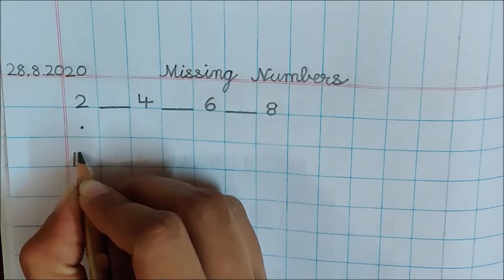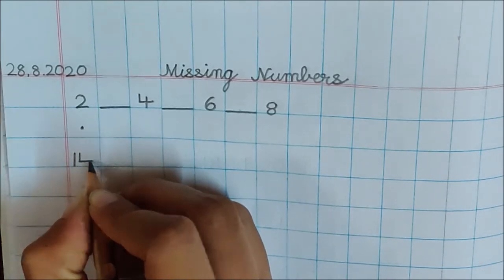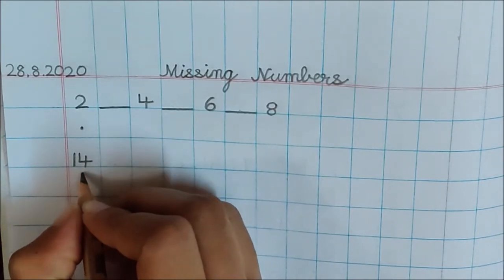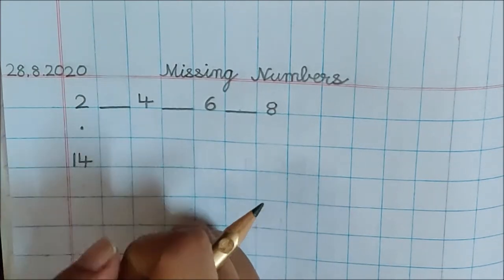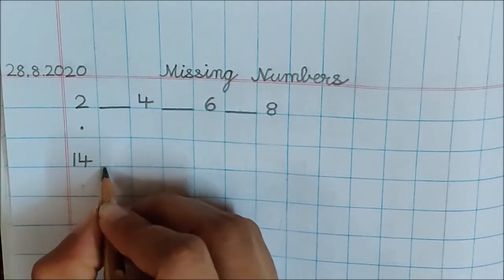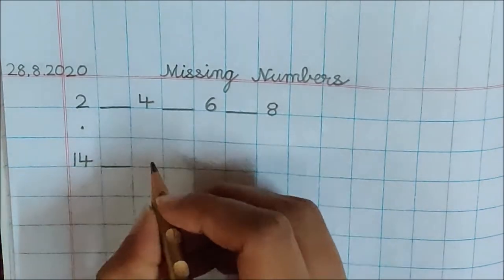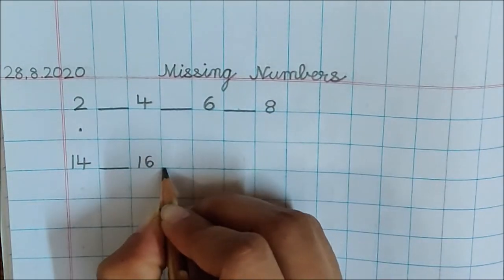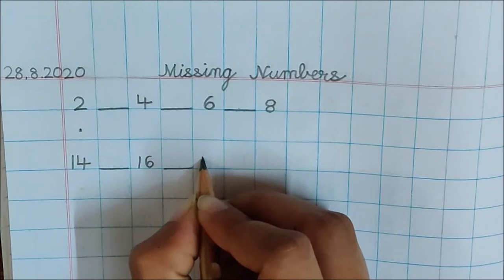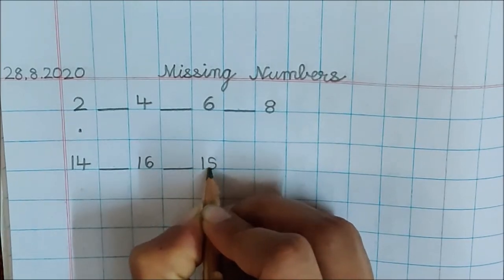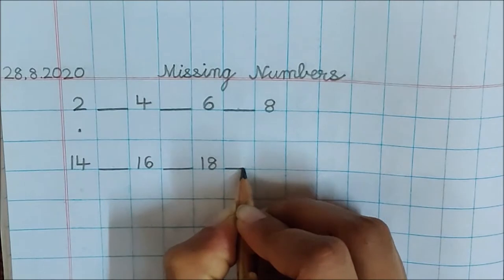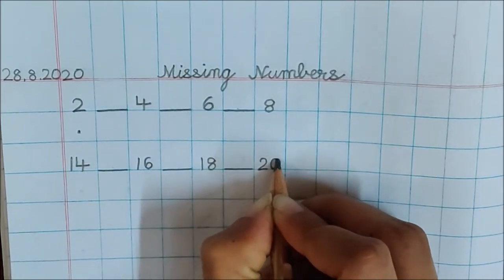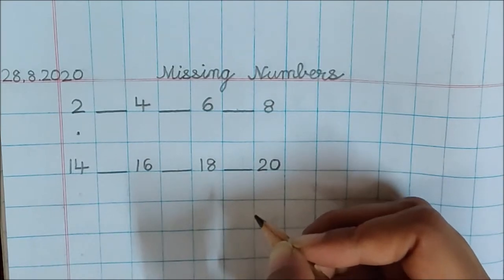See how am I writing 4? You will cut this line. 14, and I have written this in one box. 14, dash, 16, dash, 18, dash, 20. 20. Done?